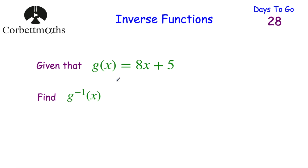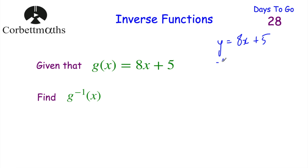Let's have a look at the next one. We've been given that g(x) = 8x + 5. Can you find the inverse function of g? Press pause now and find it. We let y = 8x + 5. At the minute y is the subject, so let's rearrange to make x the subject. We take away 5 from both sides, giving y − 5 = 8x.